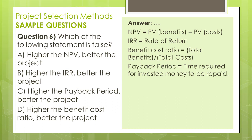Net present value is the total present value of benefits minus total present value of costs. From this definition, higher net present value means higher benefits and lower costs. Therefore, higher NPV means a better project. Regarding IRR, think of it like an interest rate — since a higher interest rate is better, a higher IRR is better. Therefore, higher IRR means a better project.